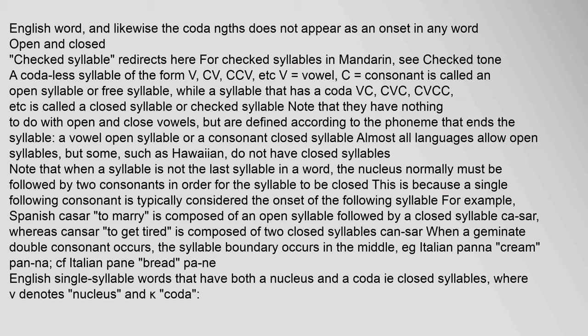When a syllable is not the last syllable in a word, the nucleus normally must be followed by two consonants for the syllable to be closed, because a single following consonant is typically considered the onset of the following syllable. For example, Spanish 'casar' is composed of an open syllable followed by a closed syllable (ca-sar), whereas 'cáncer' is composed of two closed syllables (cán-cer). When a geminate double consonant occurs, the syllable boundary falls in the middle.